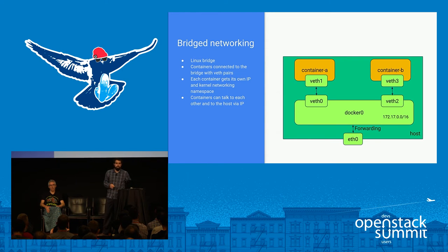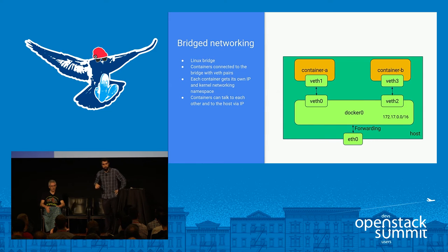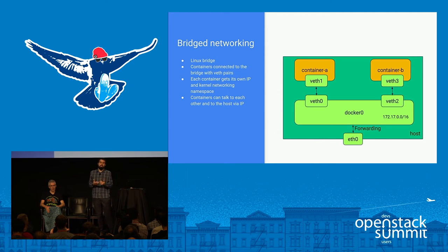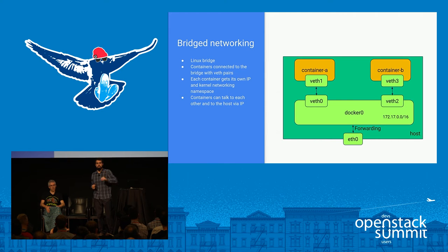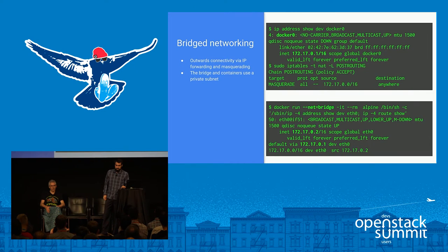This is the mode most of you used for the first time, since it's Docker's default, in which Docker sets up a Linux bridge for you that is not connected to anything. The only connection to the outside world is through forwarding. To that Linux bridge — which is more like a switch because it has a lot of ports — Docker puts a veth device, which is like a pipe: what goes through veth zero appears on veth one. Veth one and veth three in this case are already in the kernel namespaces that Docker sets up for the containers.